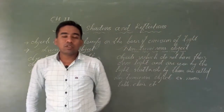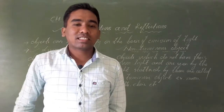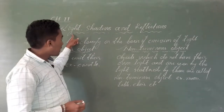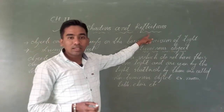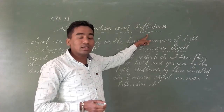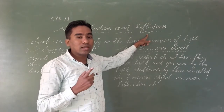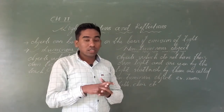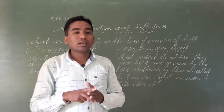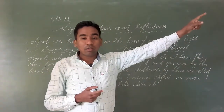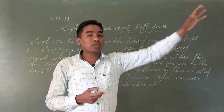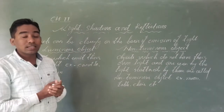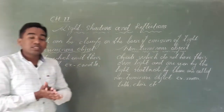Good morning children, welcome to our online class. In our previous class, we started the chapter Light, Shadows and Reflection. We learned that light is a source of energy. We get light naturally from the sun, and artificially in our homes from electric bulbs, which also provide us light during the night time.